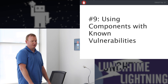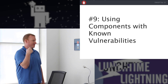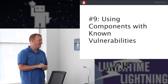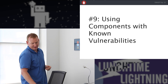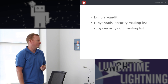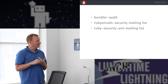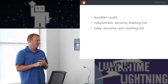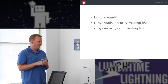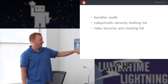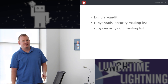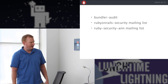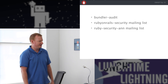Number nine is using components with known vulnerabilities. All of the components we use — operating systems, servers, Ruby, RubyGems, Rails, things like that — all have security issues, and staying on top of those is important. There's a thing called Bundler Audit, which we have a research card for and are considering running as part of our CI, that will tell you whether there are any known security vulnerabilities against the gems in your bundle so you can update them. There are also two mailing lists for Ruby and Rails developers — they're low volume, just announcements of security issues — and I would suggest signing up for those.